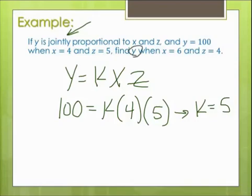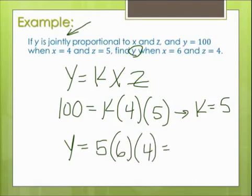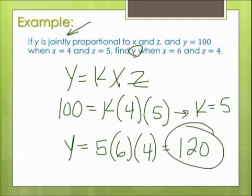Alright, so find y when k is 5, x is 6, and z is 4. Okay, so 5 times 6 is 30, 30 times 4 is 120. And in this case, it's hard to check the answer to see if it's reasonable or not, because y is proportional to the product of x times z. So we're just going to assume that that's the right answer. And it is.